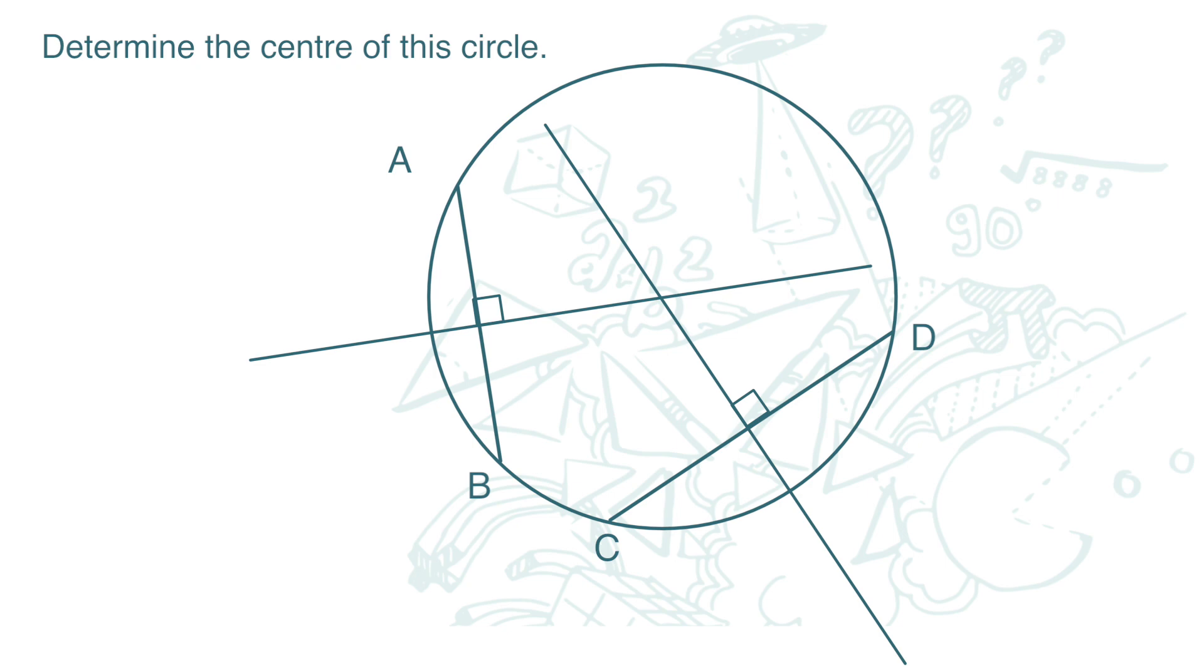Where the two bisectors meet is the center of the circle.